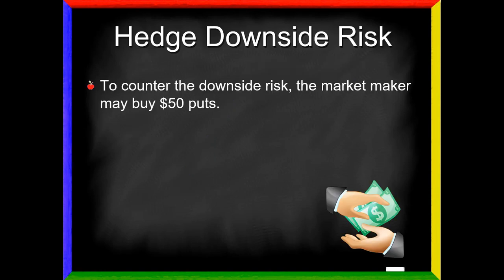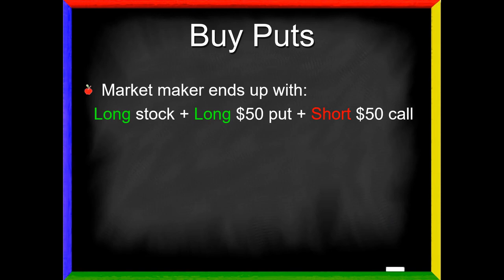To hedge this downside risk, the market maker may decide to buy the $50 puts. Because a put gives you the right to sell shares. If the stock price starts heading down and he's getting in trouble, he always has the right to put those shares off to somebody else for $50. Put options act like an insurance policy. He's guaranteed to always be able to receive at least $50, assuming he has the $50 strike. Understand that the calls and puts must be the same strike.